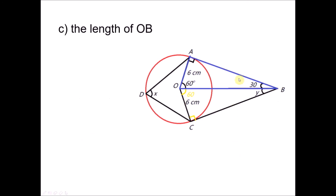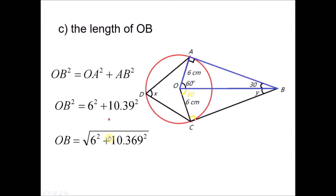For the last part, we want to find the length of OB. Looking at triangle OAB carefully, OB is the hypotenuse. Since we know OA equals 6 and AB equals 10.39, we can use Pythagoras' theorem: OB squared equals OA squared plus AB squared. Substituting the values and taking the square root, we get OB equals 12 cm.